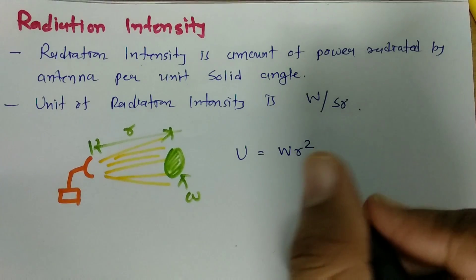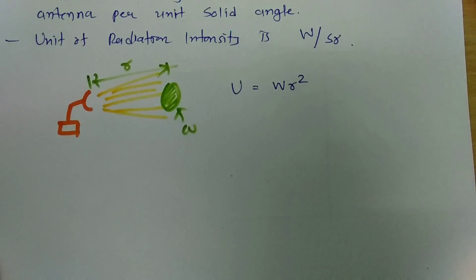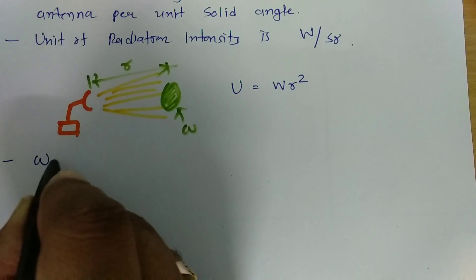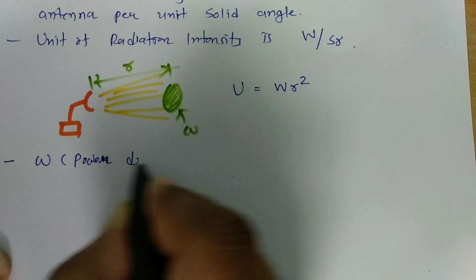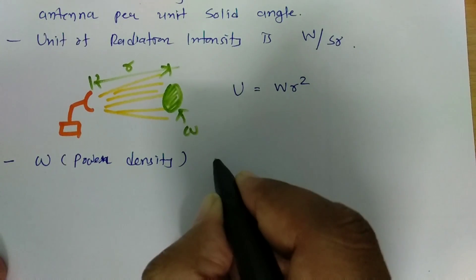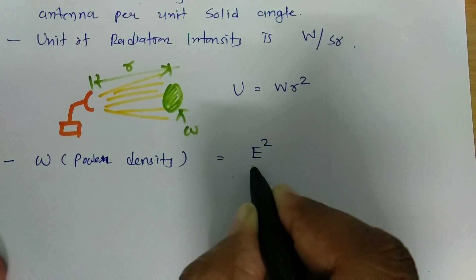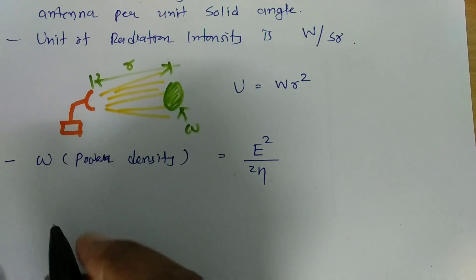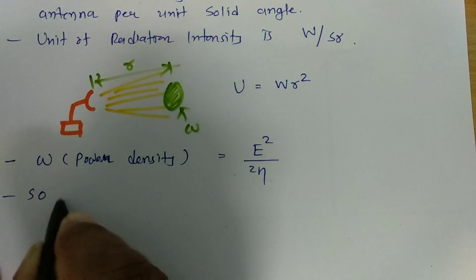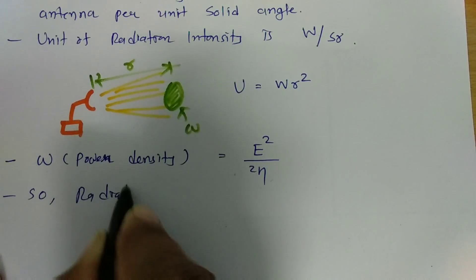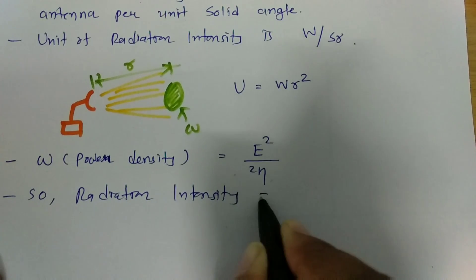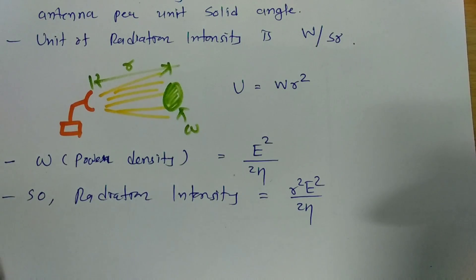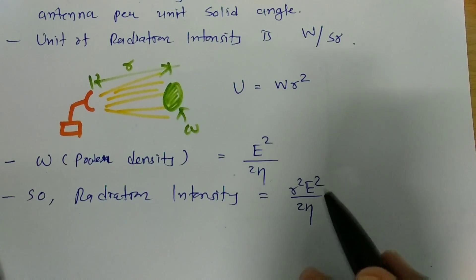Now, in the last session, I calculated radiation density — that is power density W — using electric field and magnetic field. Based on the electric field, it is E squared divided by 2 eta. So if I place that into the radiation intensity formula, then radiation intensity becomes R squared times E squared divided by 2 eta.